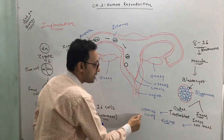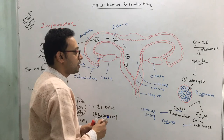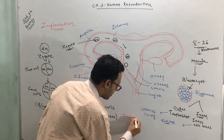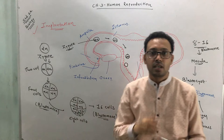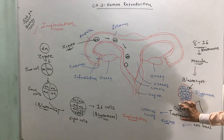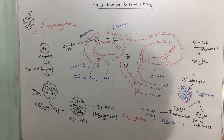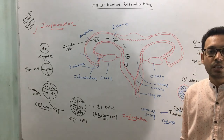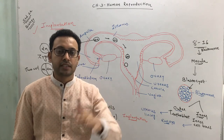The cells of the trophoblast attach to the wall of the uterus — the uterine lining. The inner cell mass develops into the embryo. The process of attachment of the blastocyst to the lining of the uterus is called implantation. The inner cells present in the inner coat of the blastocyst develop into the embryo.